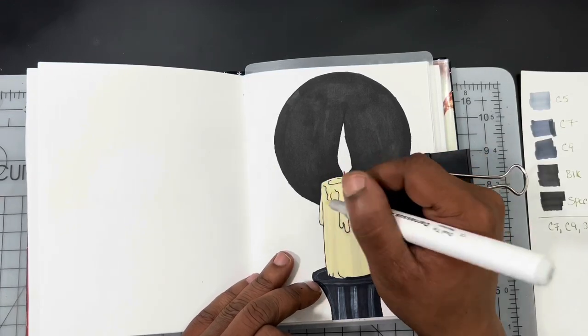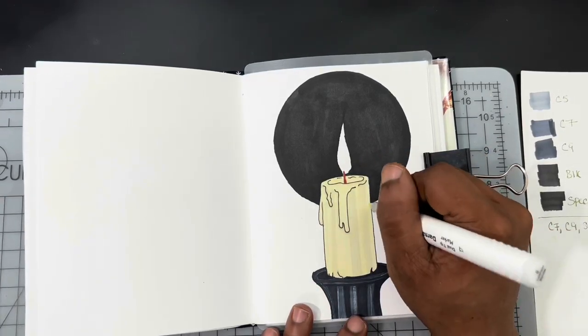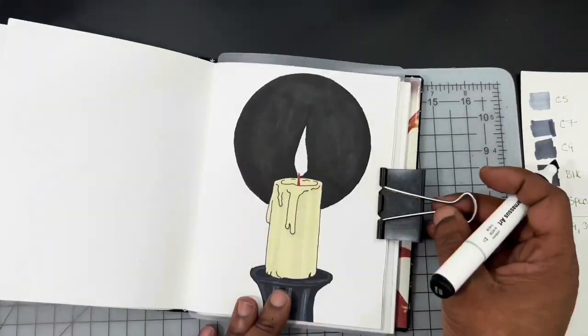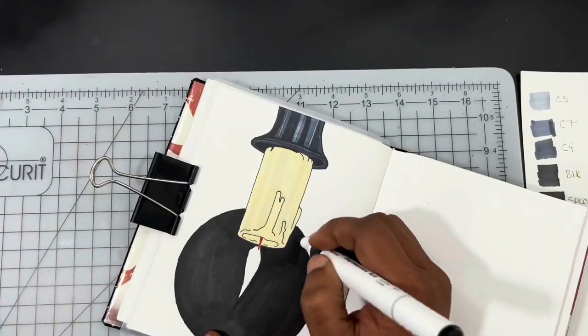With that said, eventually I switched over to warm gray. I'm going to be using a warm gray 1 to do the shading in the candle and under the melted wax that's coming down.